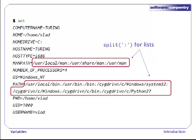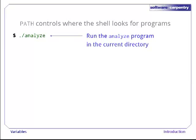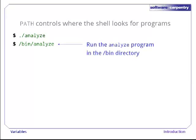Let's have a closer look at one of the most important of those list-valued variables: PATH. Its value defines the shell's search path, i.e., the directories that the shell looks in for runnable programs. If we type a command like ./analyze with a specific directory in the path, the shell runs the program that path specifies. Similarly, if we type ./bin/analyze, the program runs that specific program. We've provided a specific path so it knows what to do.